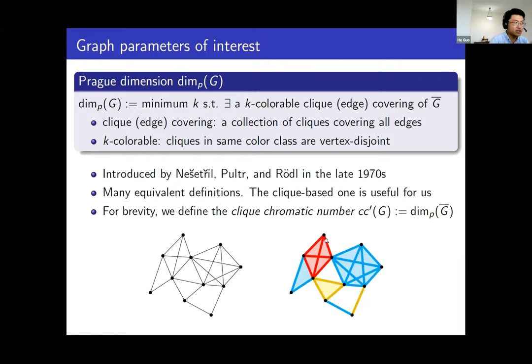What does it mean that the clique covering is clique-colorable? It means we can give the cliques in this collection different colors so that cliques in the same color class are vertex-disjoint. For example, if you have this clique coloring, you need at least three colors, because these three cliques must receive different colors since they intersect at a vertex.